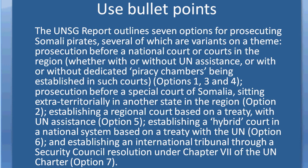I then lay out the options: prosecution before a national court or other courts in the region, covering options one, three, and four; prosecutions before a special court of Somalia sitting extraterritorially in another state in the region, option two; establishing a regional court based on a treaty with UN assistance, option five; establishing a hybrid court in a national system based on a treaty with the UN, option six; and establishing an international tribunal through a Security Council resolution under Chapter Seven of the UN Charter, option seven.